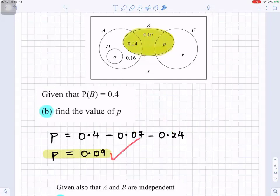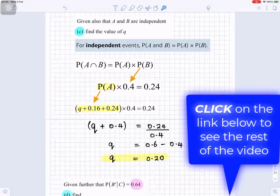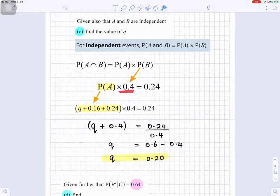Given also that A and B are independent, find the value of Q. For independent events, probability of A and B is equal to probability of A times probability of B. So probability of A intersection B is probability of A times probability of B. So we'll have probability of A times the probability of B, which is 0.4, is equal to 0.24.